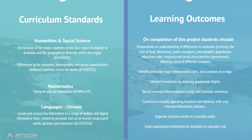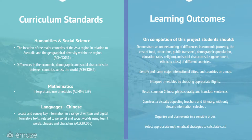On completion of this project, students should demonstrate an understanding of differences in economic, demographic and social characteristics of different countries; identify and name major cities and countries on a map; interpret timetables by choosing appropriate flights; recall common Chinese phrases orally and translate sentences; construct a visually appealing brochure and itinerary with only relevant information selected; organise and plan events in a sensible order; and select appropriate mathematical strategies to calculate cost.